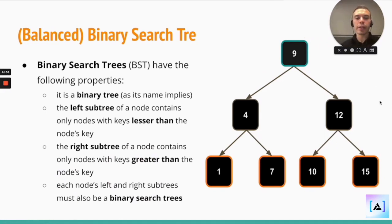The left subtree of a node contains or must contain only nodes with keys lesser than that node's key. And that is followed here. The right subtree of a node contains only nodes with keys greater than the node's keys. I'm using the root node as an example, but this rule holds up for all nodes. And then each node's left and right subtrees must also be binary search trees.